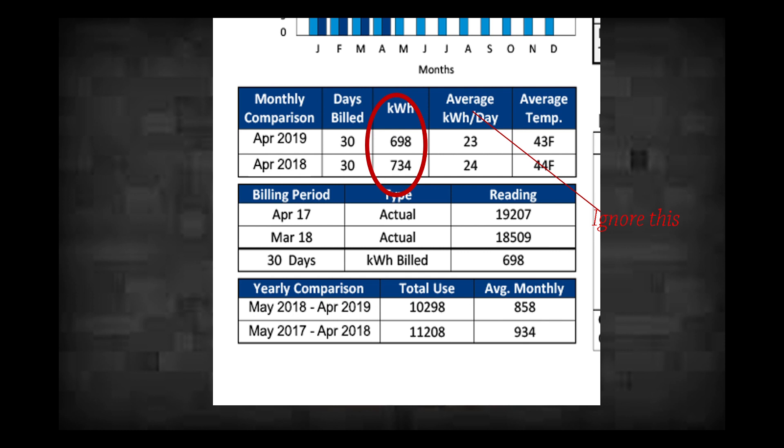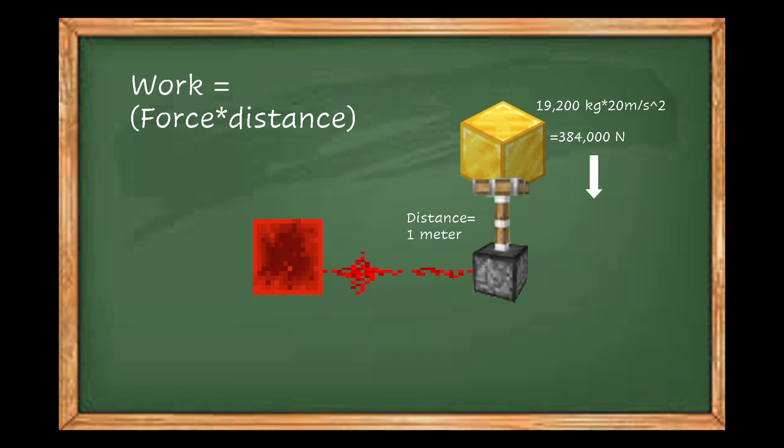To get this, we just need to see the work done by the piston in our power calculation, which we got as 384,000 joules, equating to a whopping 0.1076 kilowatt hours.